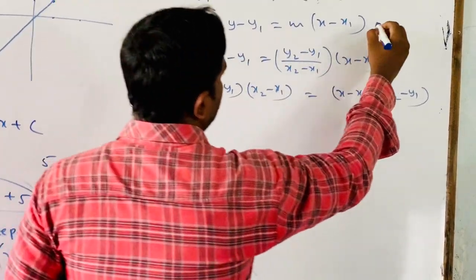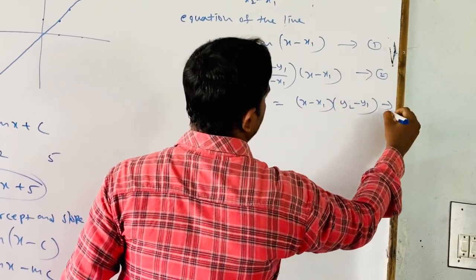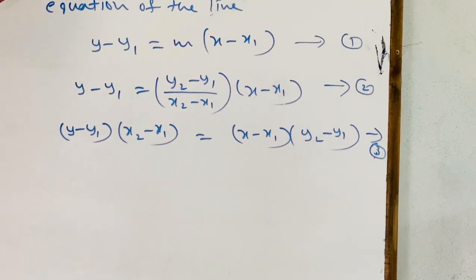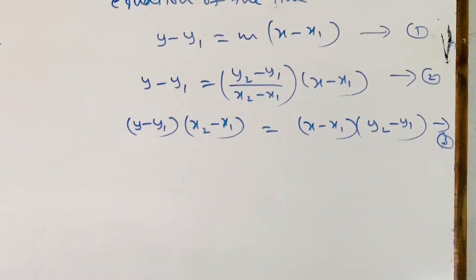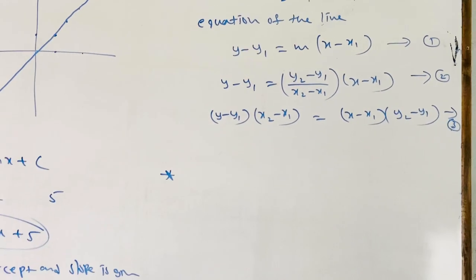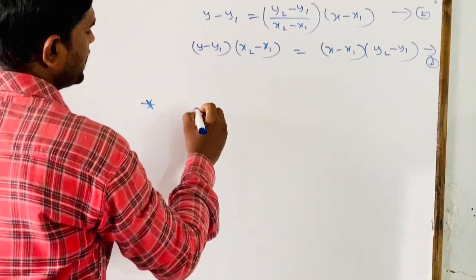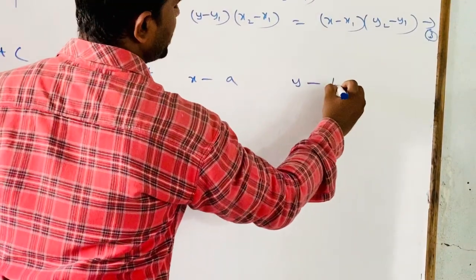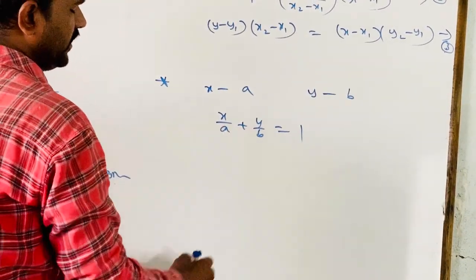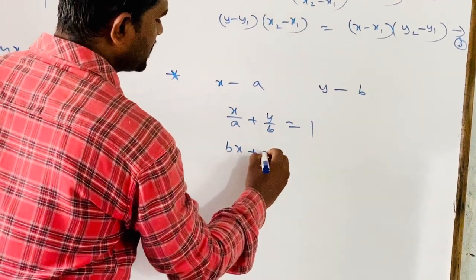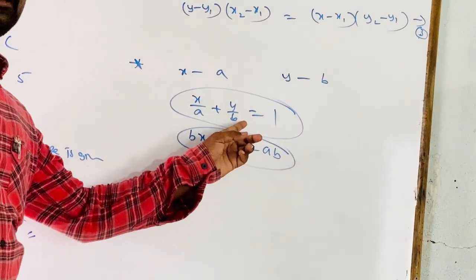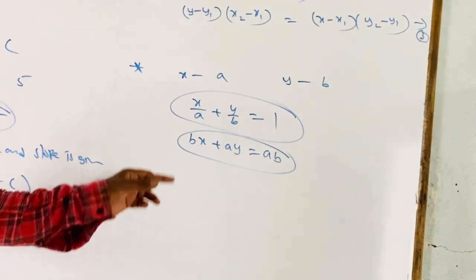All three forms — y − y₁ = m(x − x₁), with m substituted, and the cross-multiplied form — represent the same equation passing through the two given points. Finally, when both intercepts are given with x-intercept a and y-intercept b, the intercept form is x/a + y/b = 1, which simplifies to bx + ay = ab.